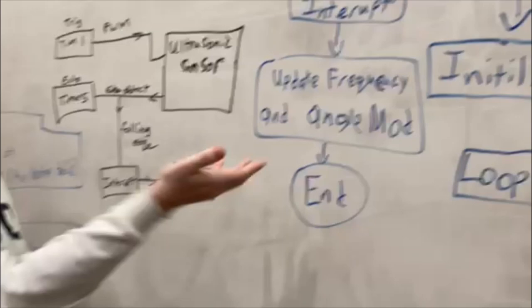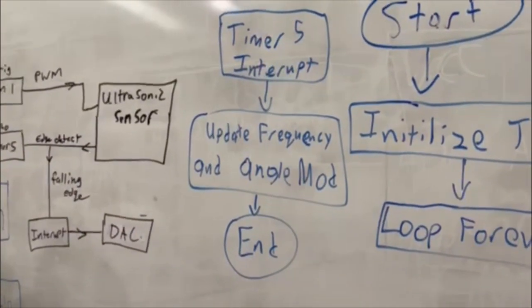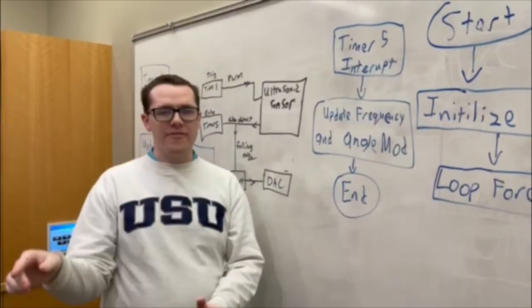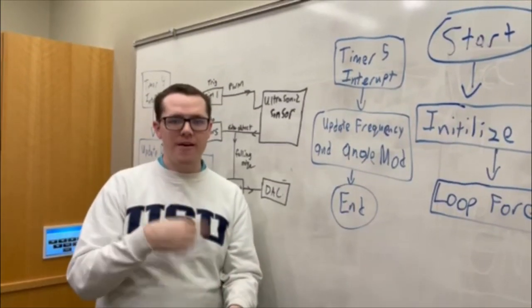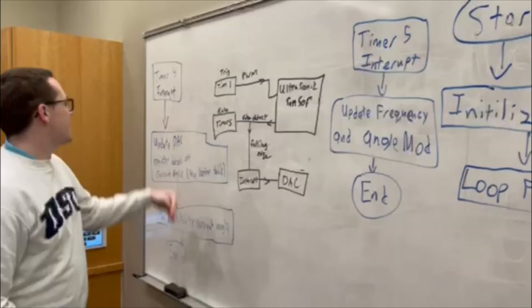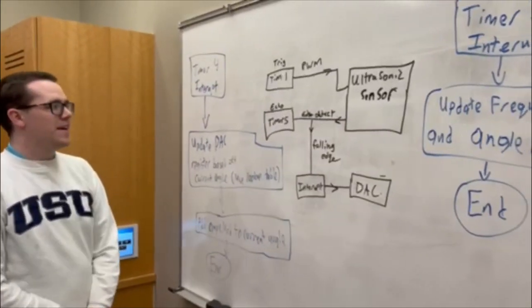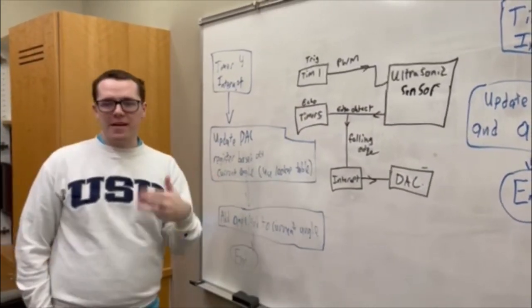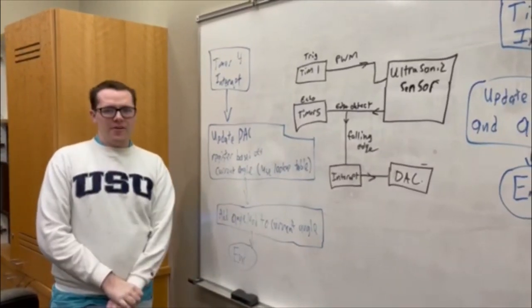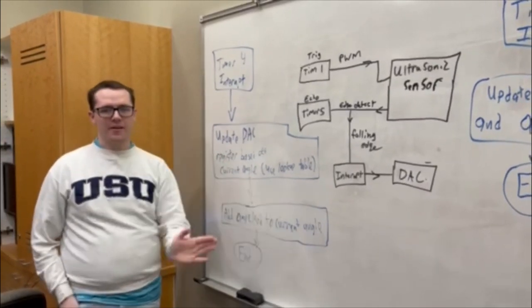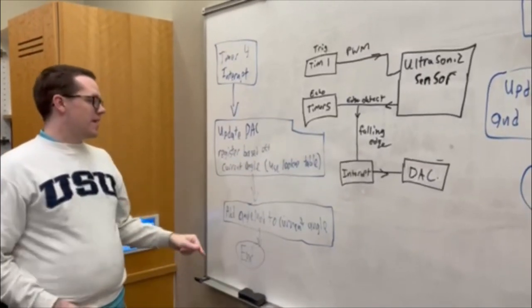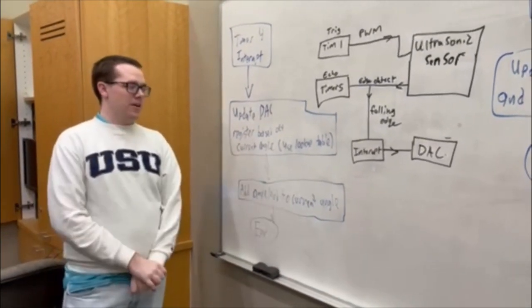Angle mod is the value we add to our current angle every time we update the digital-to-analog converter. Timer 4 is triggered periodically so the DAC continually produces a smooth sine or cosine wave. Every time Timer 4 is triggered, we access our lookup table for the cosine wave.